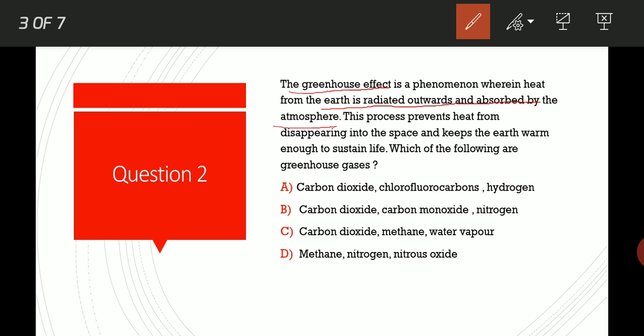Option B: Carbon dioxide, carbon monoxide, nitrogen. Option C: Carbon dioxide, methane, water vapour. Option D: Methane, nitrogen, nitrous oxide. The correct option is Option C, carbon dioxide, methane and a very small amount of water vapour present in the atmosphere.